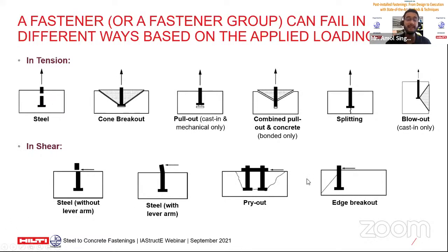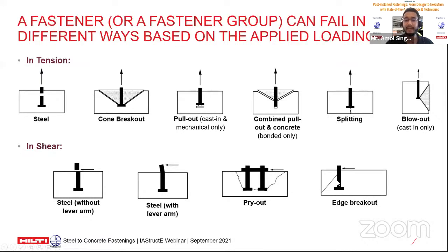The most prominent shear failure mode is edge breakout — a cone-shaped fracture surface originates at a certain depth in the anchor and moves towards the free surface or edge. This happens when you are close to an edge, though it can still occur even when not very close. The key is to guard against all of these failure modes.